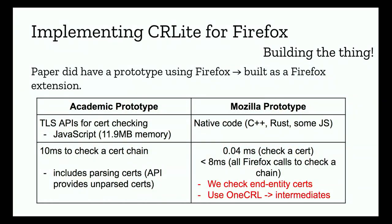The academic paper had a prototype built as a Firefox extension, requiring TLS JavaScript APIs for certificate checking — and JavaScript can be slow and cumbersome. In our situation, we can make this native to the browser using C++, Rust, and a little bit of JavaScript. The academic paper cites 10 milliseconds to check a certificate chain; for us to check one certificate against CRLite on a local machine is about 0.04 milliseconds, and we're coming in at under 8 milliseconds when accounting for all Firefox calls. We only use CRLite to check end-entity certificate revocation, and we still make use of OneCRL for checking revocation status of intermediate certificates.